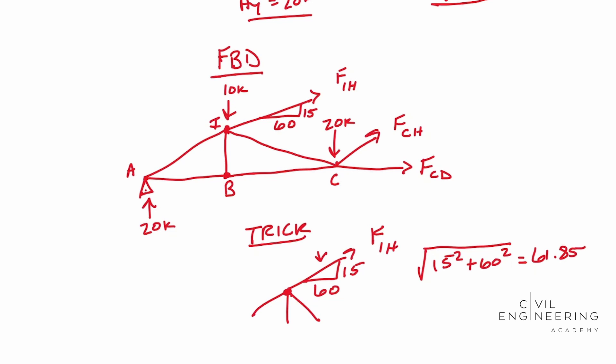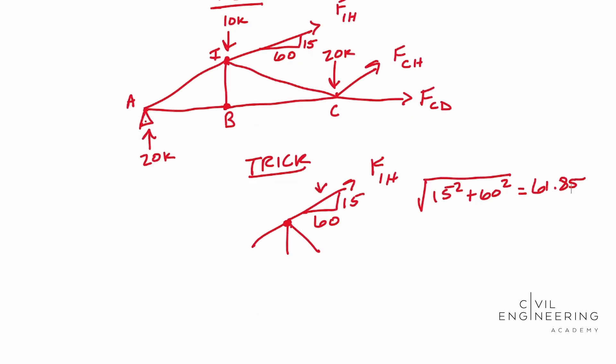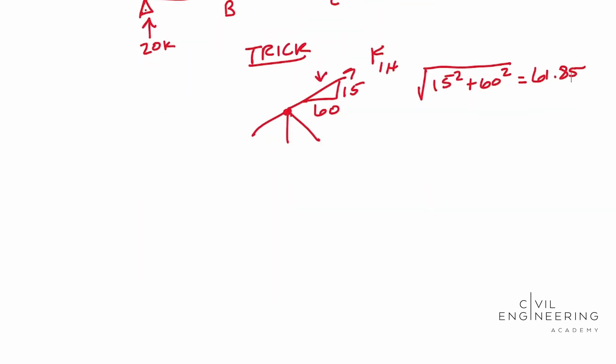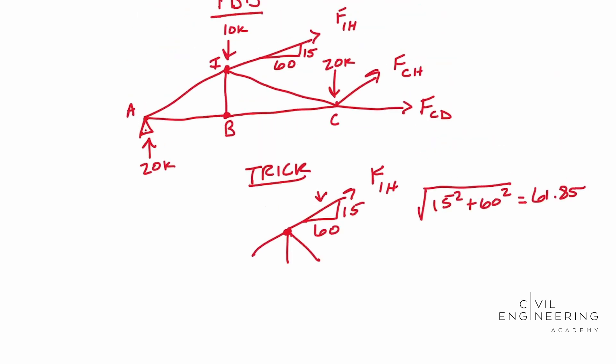That means that our hypotenuse is 61.85. So instead of using sine or cosine or getting confused, we can just use this, we can use this ratio that it gives us. If it gave us an angle there, we could probably use sine cosine, it would be a lot easier, but we don't have an angle. Quite frankly, I don't want to solve for one either, so that's what we're going to use, we're going to use these ratios.